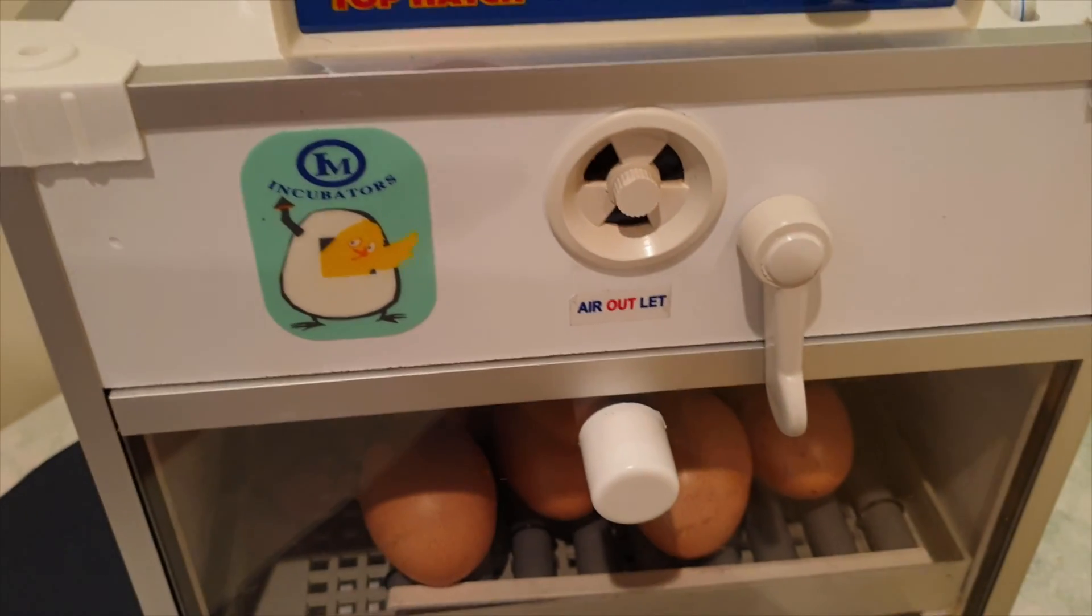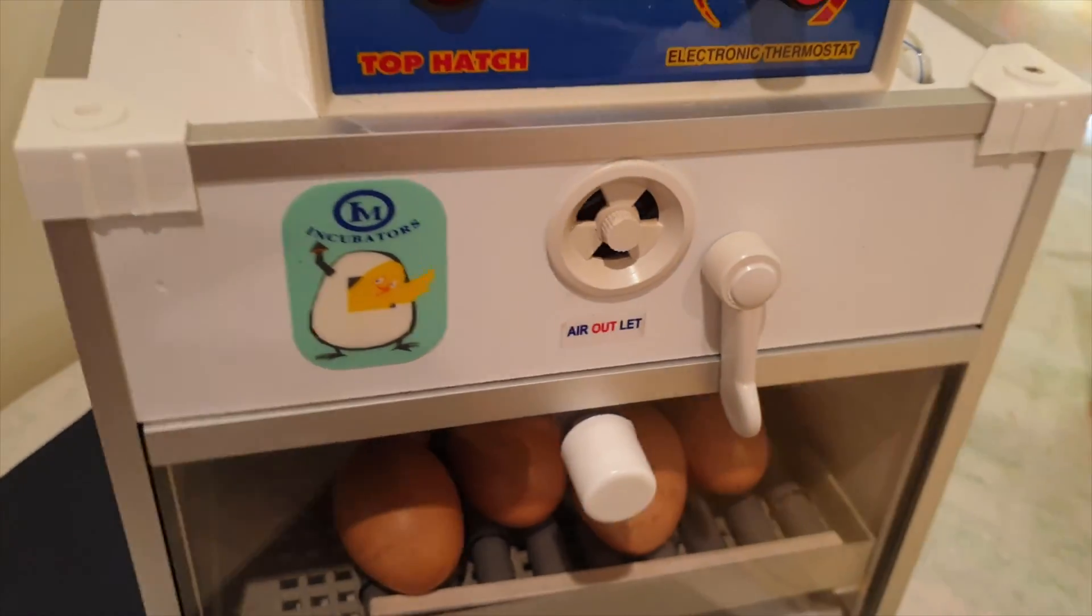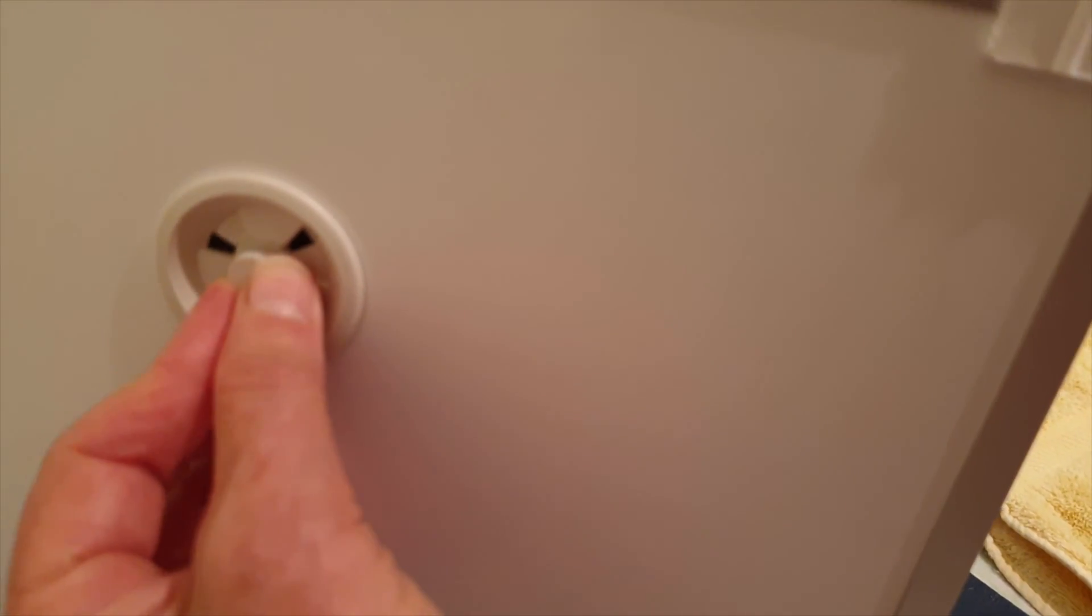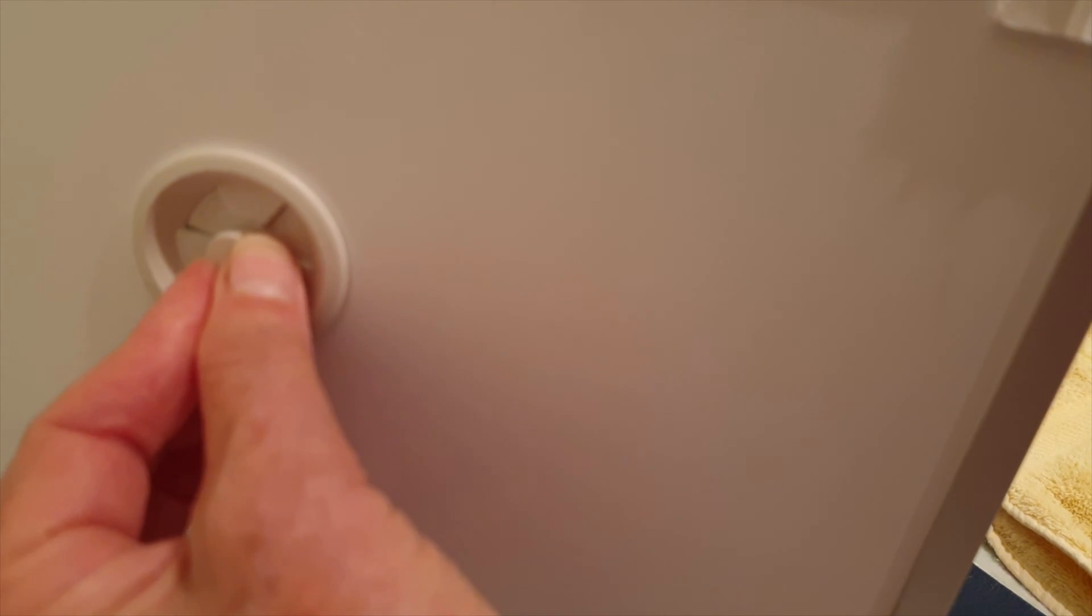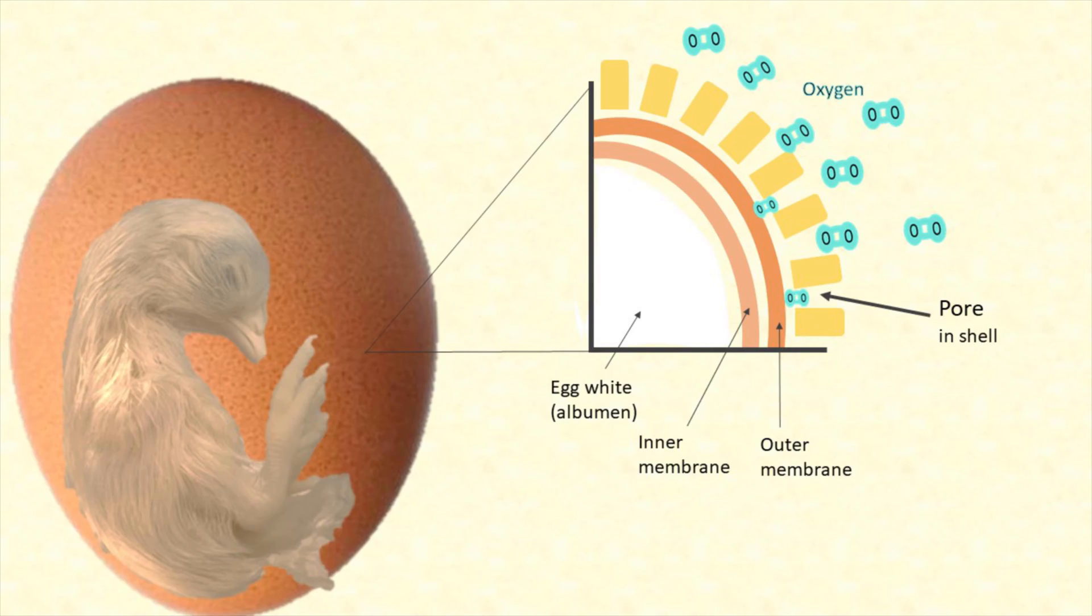The amount of airflow can be adjusted using these two vents. They must be completely open during the final couple of days when the chicks are hatching but in fact I usually leave them fully open throughout the incubation. The developing chicks need oxygen which they absorb through the eggshell from the surrounding air. So the incubation chamber must have a good supply of fresh air.